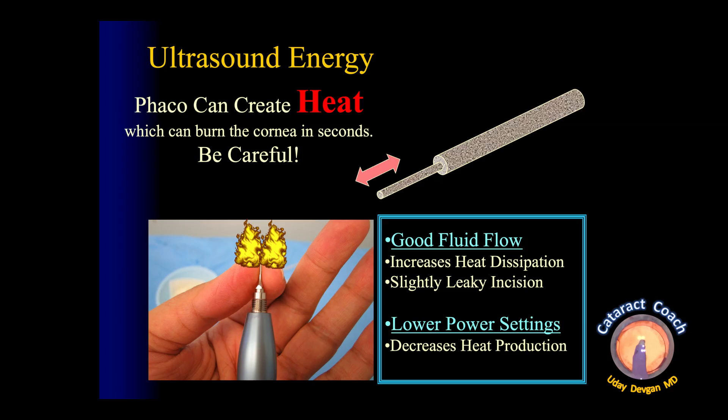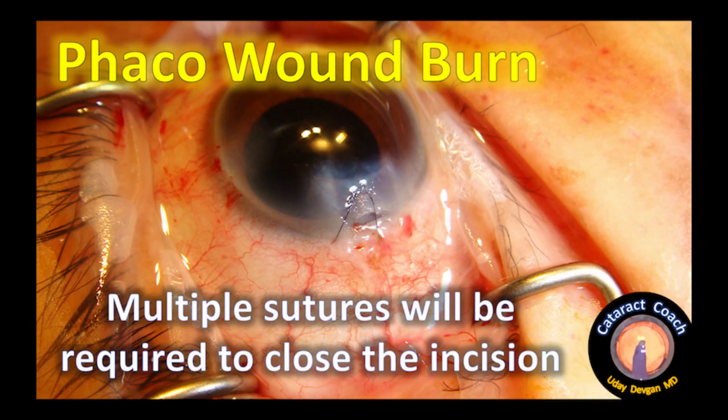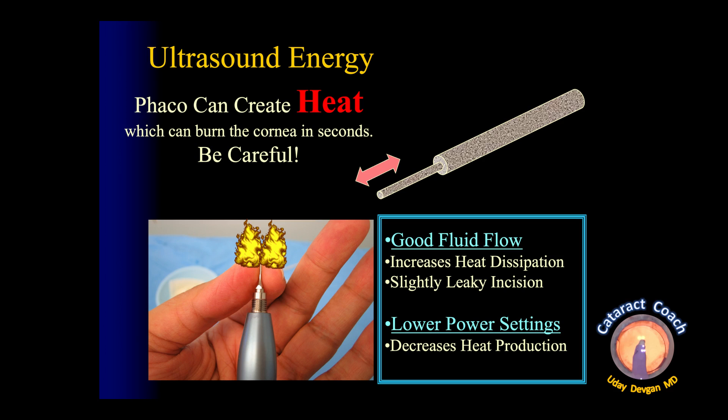Heat is produced by ultrasound energy. For a simple test, take off the phaco sleeve, pinch the tip of the phaco probe, and step on the pedal — you'll feel the heat instantly. Good fluid flow increases heat dissipation, and you want a slightly leaky incision. Without that, you can get a phaco wound burn, which may require multiple sutures and can induce irregular astigmatism. To avoid this, maintain good fluid flow and a slightly leaky incision.